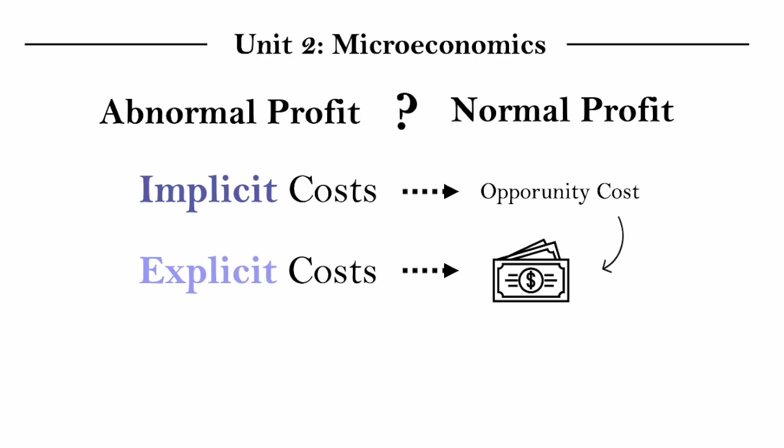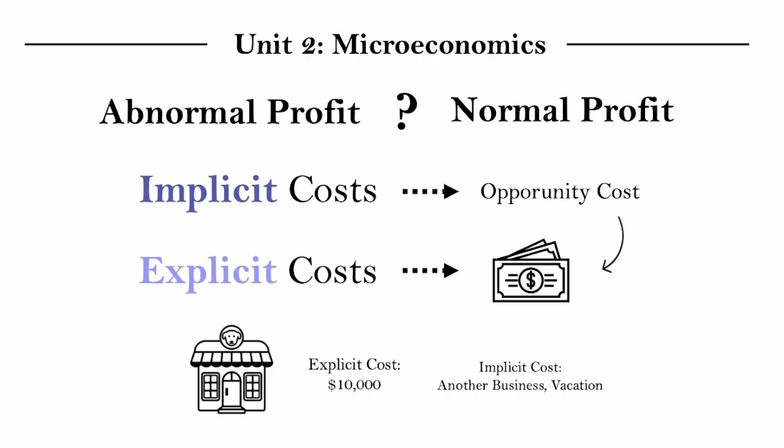For example, if it is costing someone $10,000 of explicit cost to run their pet shop, the implicit cost is what other things could that money have been used for, perhaps another business or a vacation, that this person had to forego, give up, when they spent that explicit cost on the pet shop.